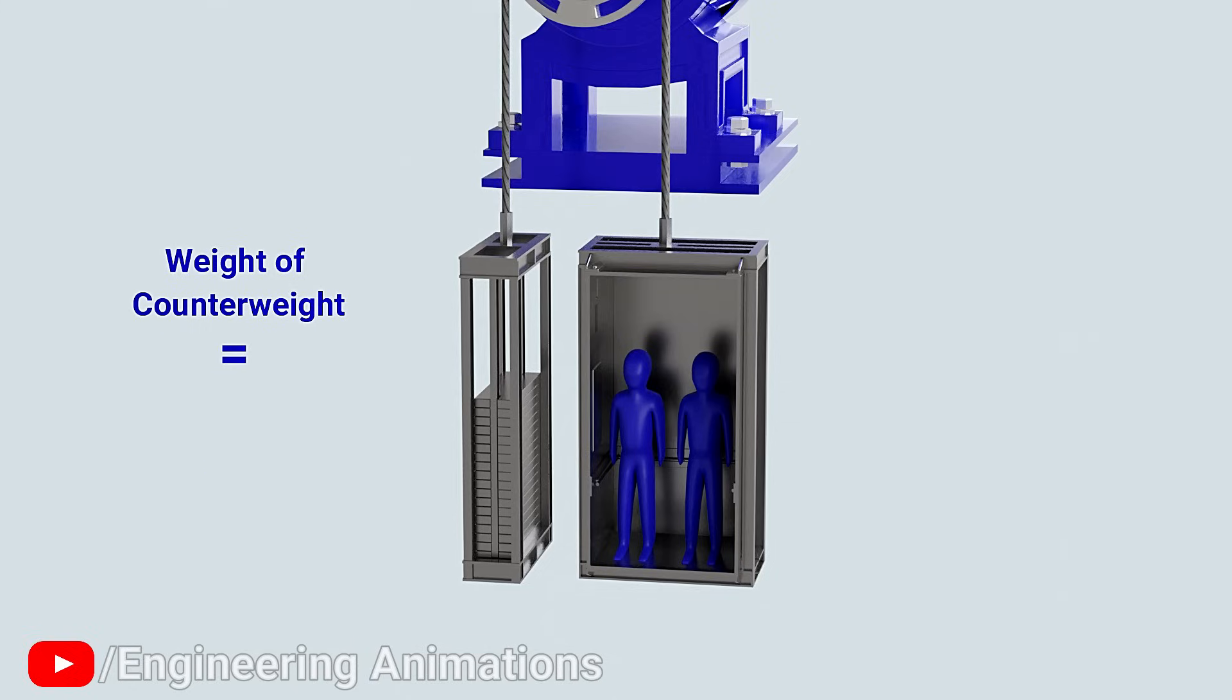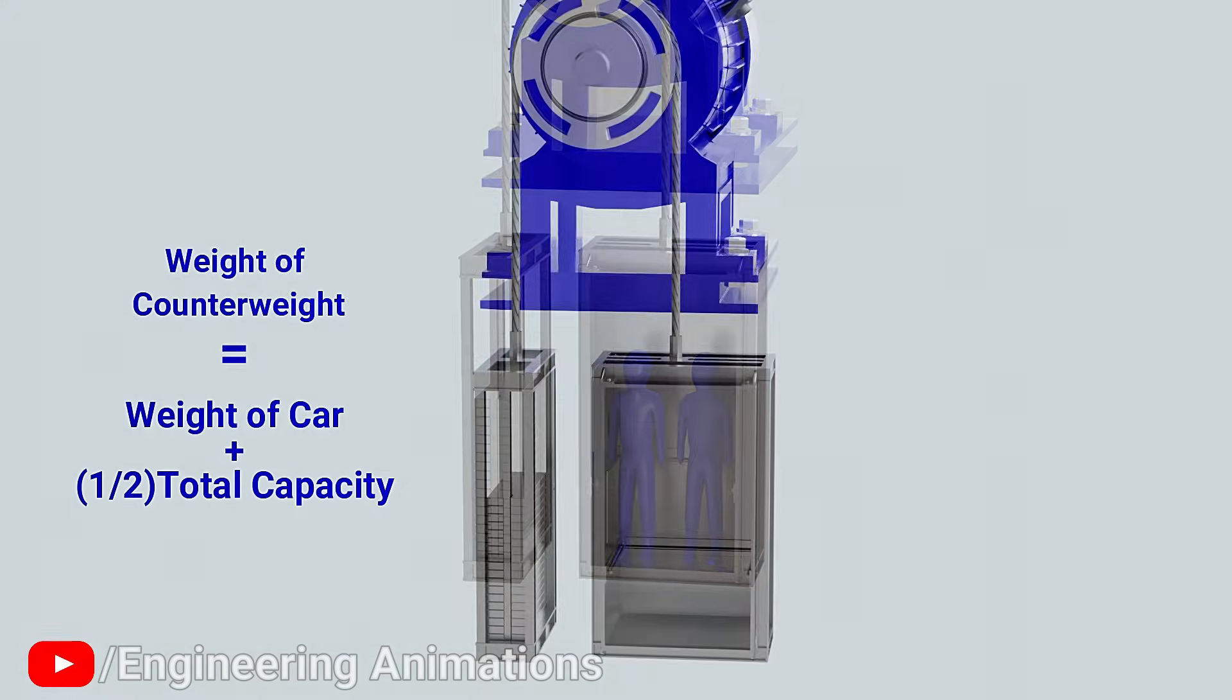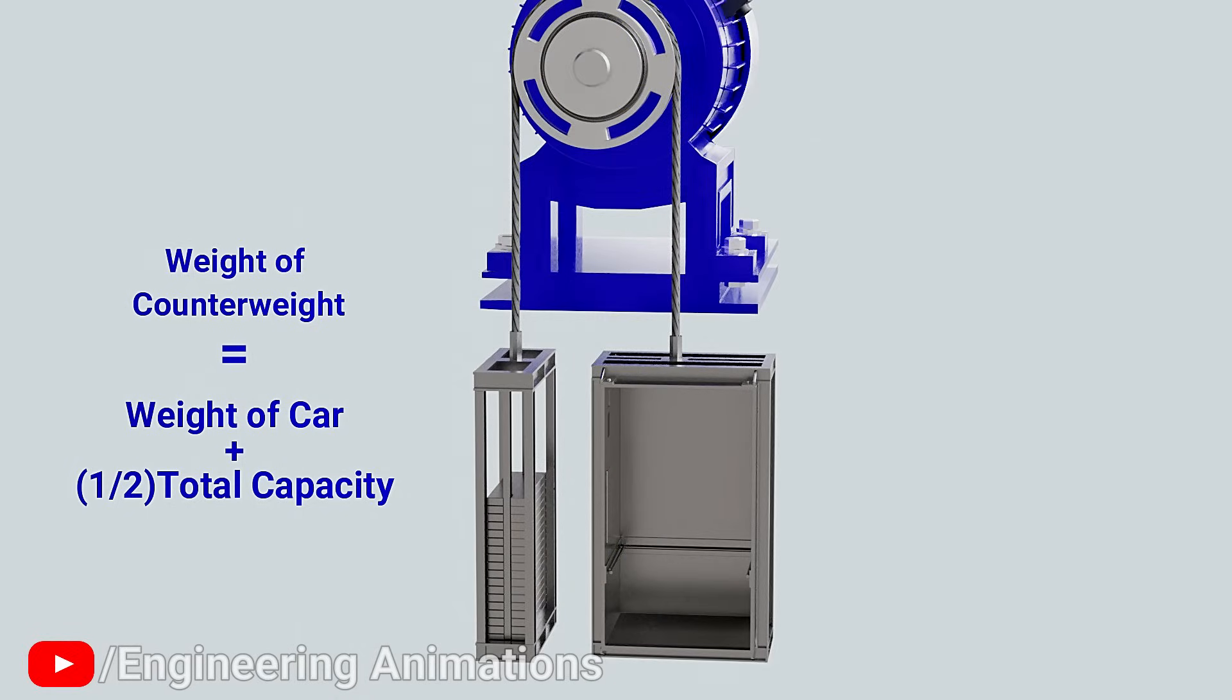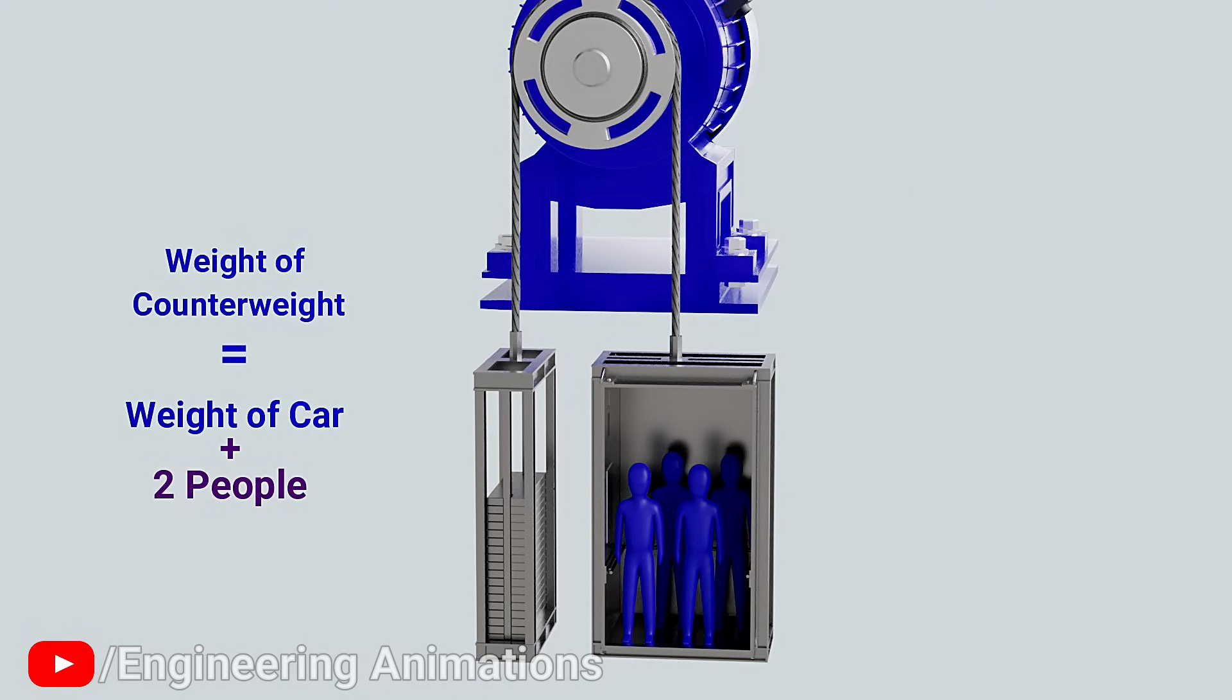So weight of counterweight is determined by adding the weight of a car and half of the total capacity of elevator. Let's understand this by using a simple example. Let's suppose the full capacity of elevator is four people. According to the formula, counterweight equals car plus two people.